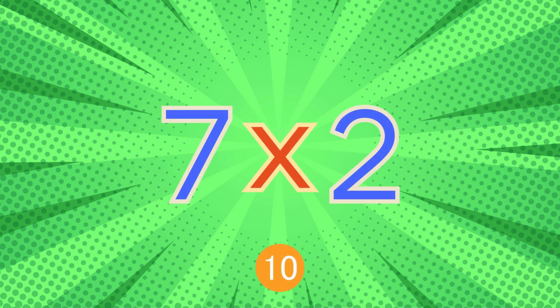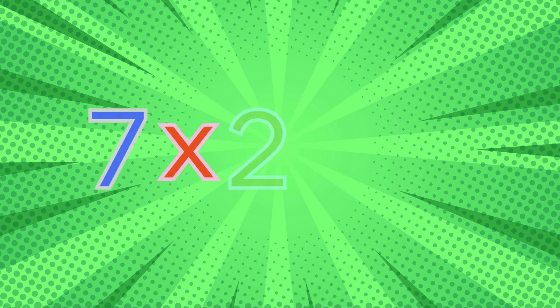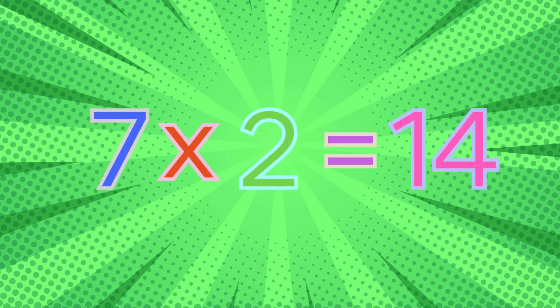Seven times two. Seven times two equals fourteen.